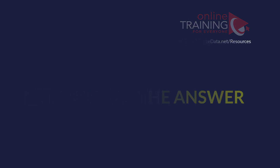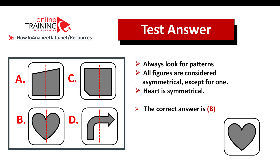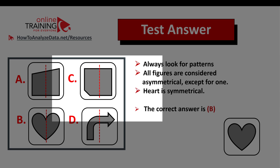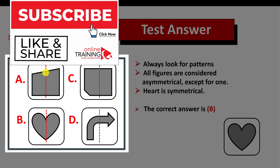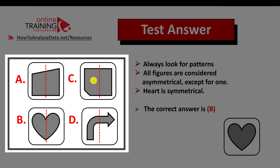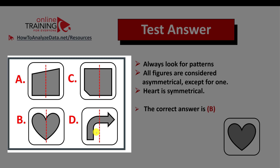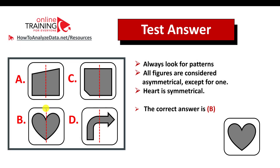Let's reveal the answer together. Simple advice: always look for patterns. All figures here are considered asymmetrical. For figure A, the part on the left of the line and the part on the right are different — the same is true for figures C and D. So figures A, C, and D are asymmetrical, making the correct choice B, which is symmetrical. Hopefully you've nailed this question and now know how to answer similar problems on the test.